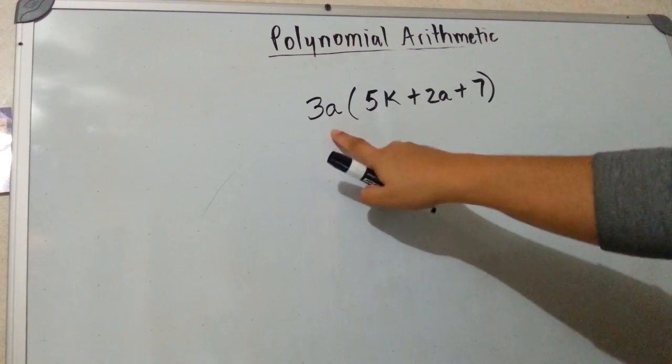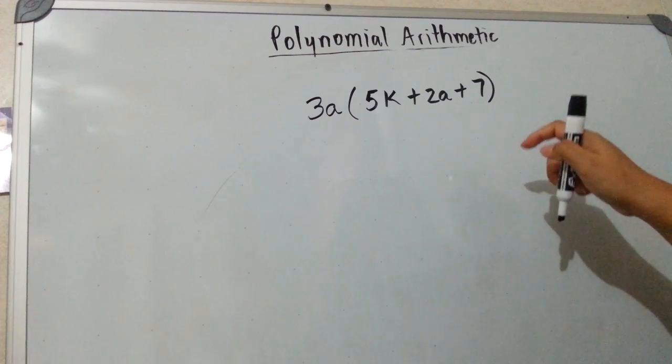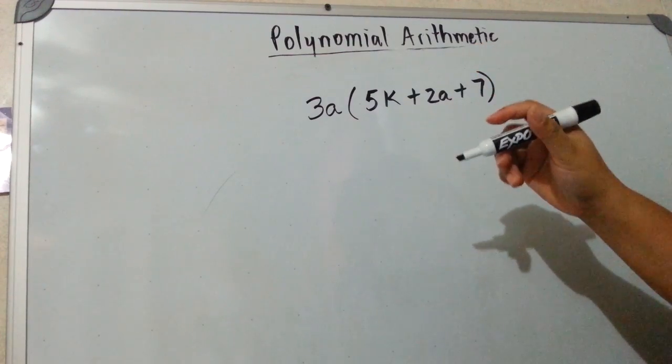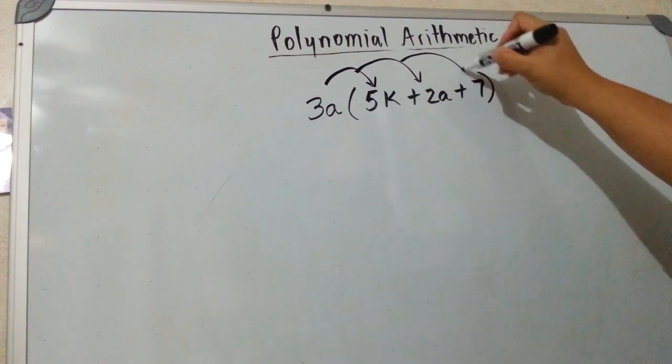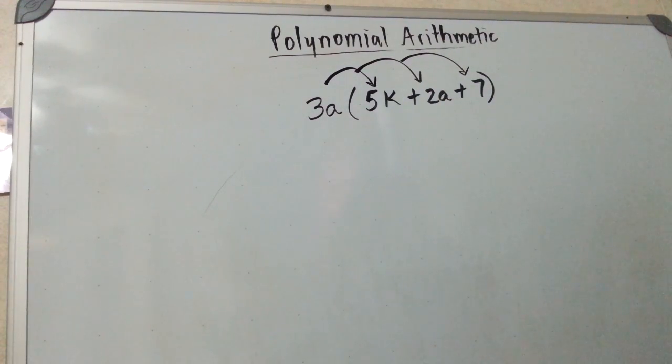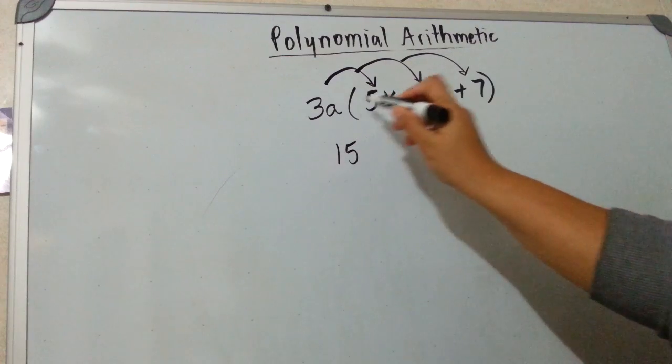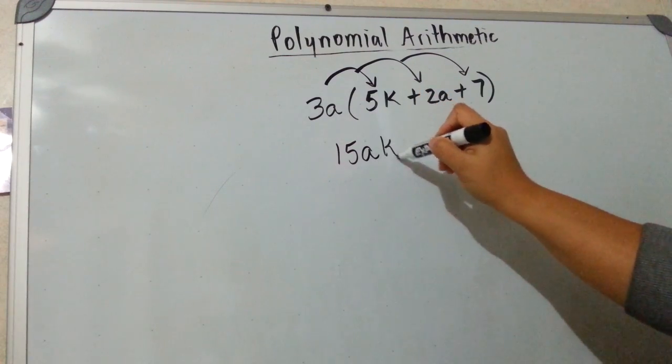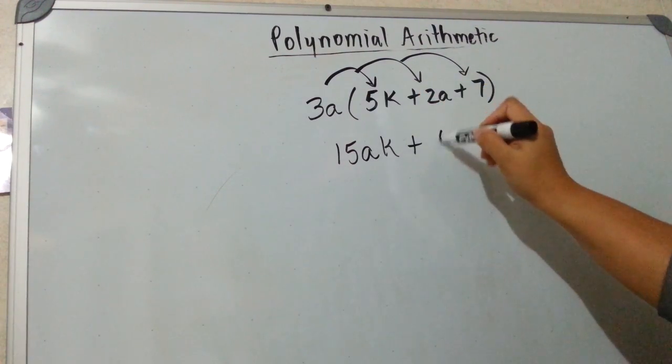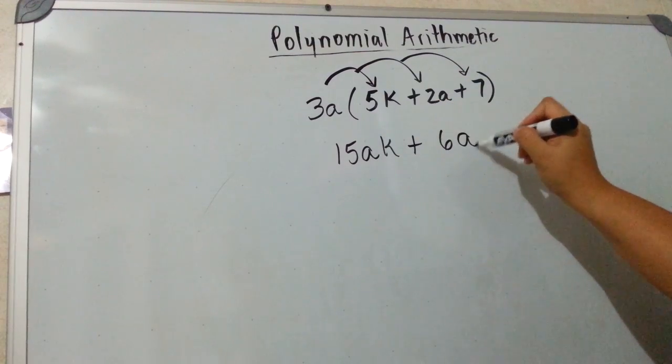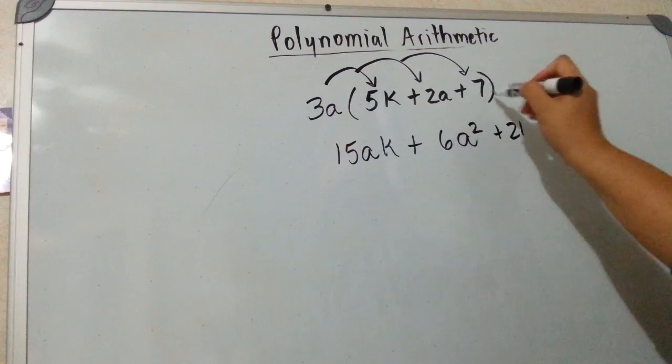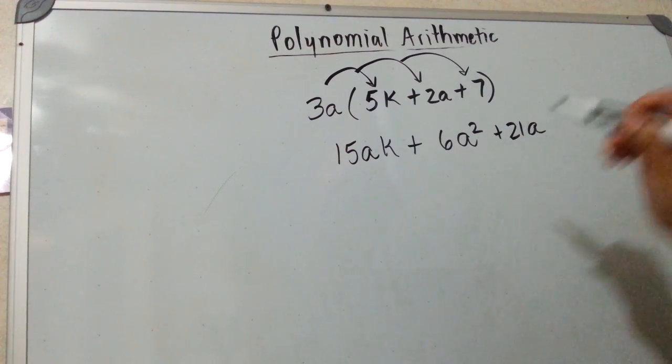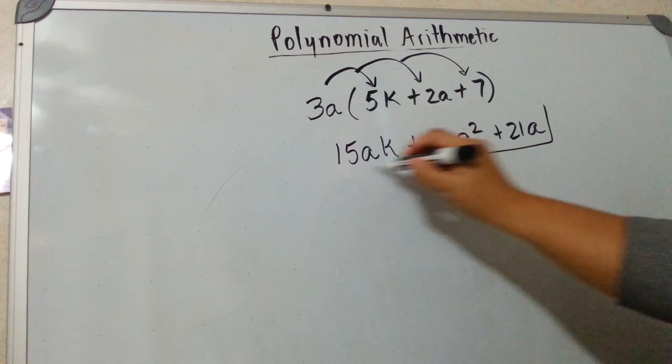So in this example, you have 1 monomial times a trinomial, and you would do the same thing. You would distribute this here. And so you do 3 times 5 is 15. This is an a, and that's a k. 3 times 2 is 6. a times a is a squared. 3 times 7 is 21. And we only have an a. So this should be the final answer. These are not like terms. So yes, you are done.